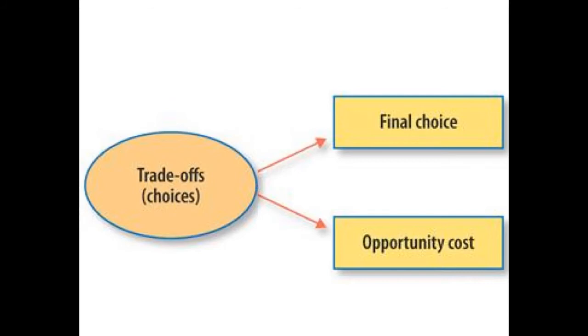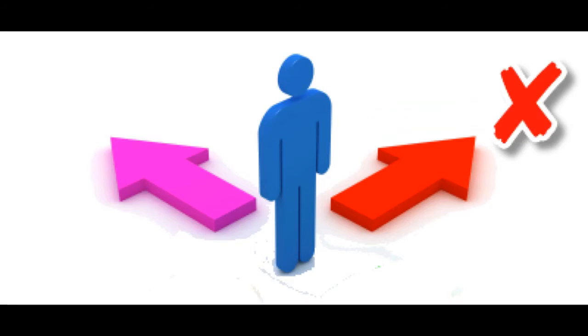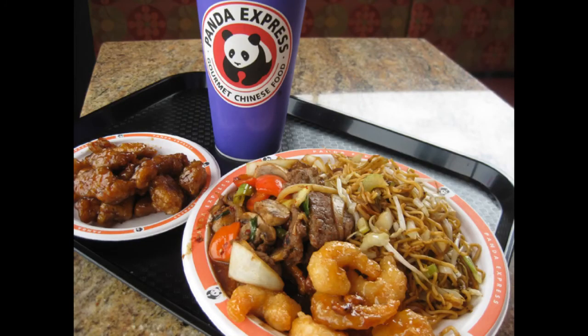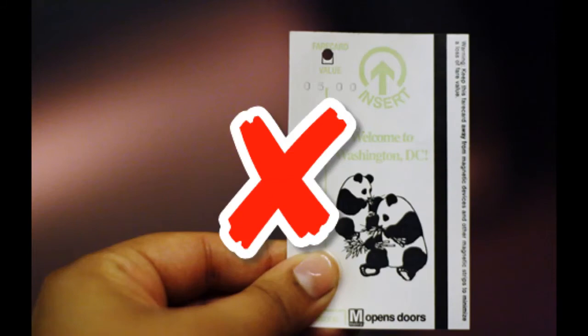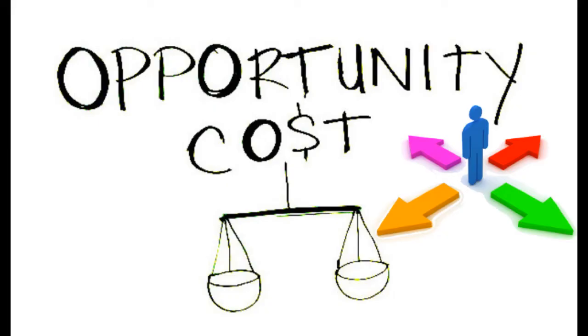Whenever you make a trade-off, the one thing you do not choose is your opportunity cost. So you have a final choice, and the opportunity cost — you need to know that the opportunity cost is the path not taken. So let's say you bought the lunch at Panda Express. Well, that means your opportunity cost is not only the hot dog, but more importantly, the metro fare card that will take you home.